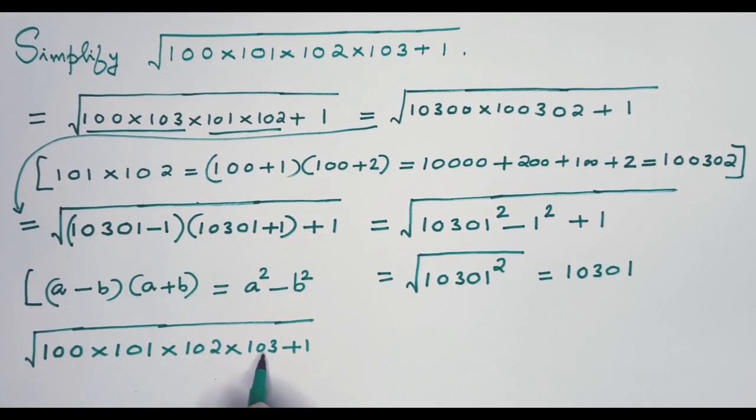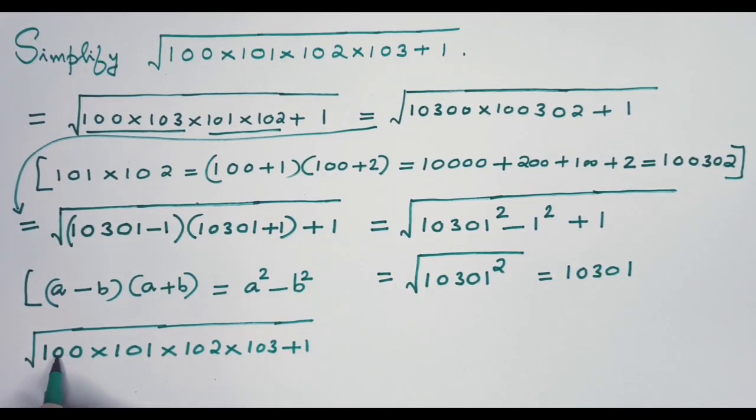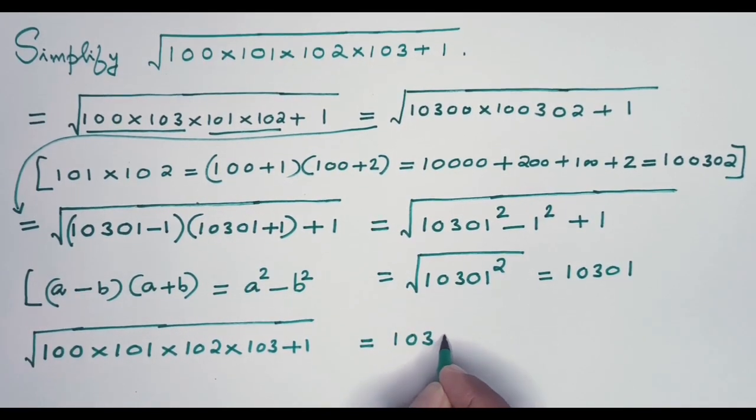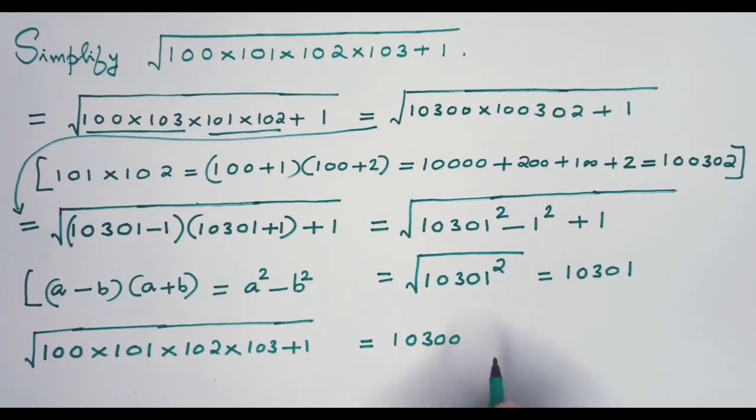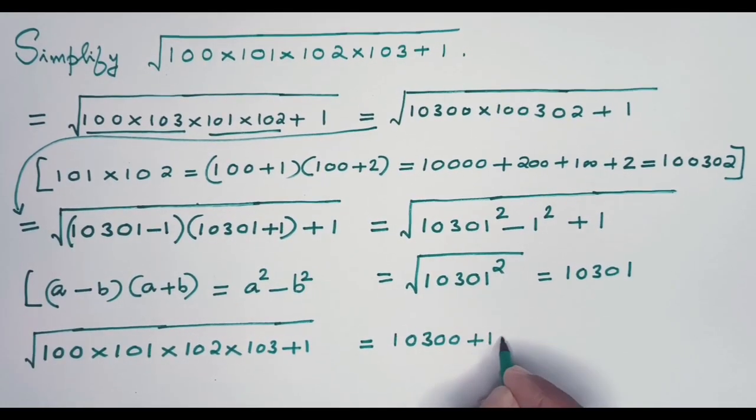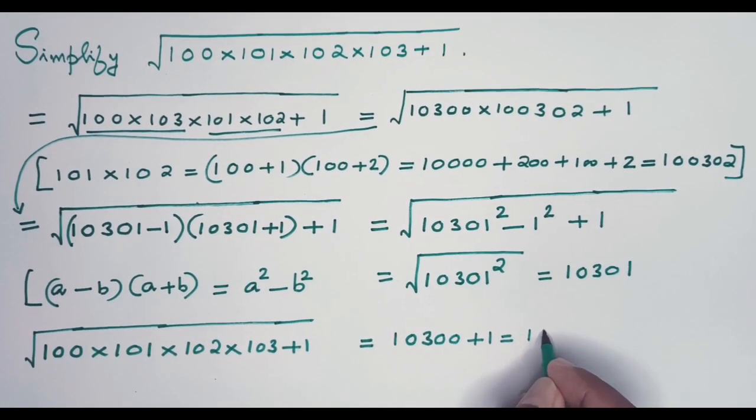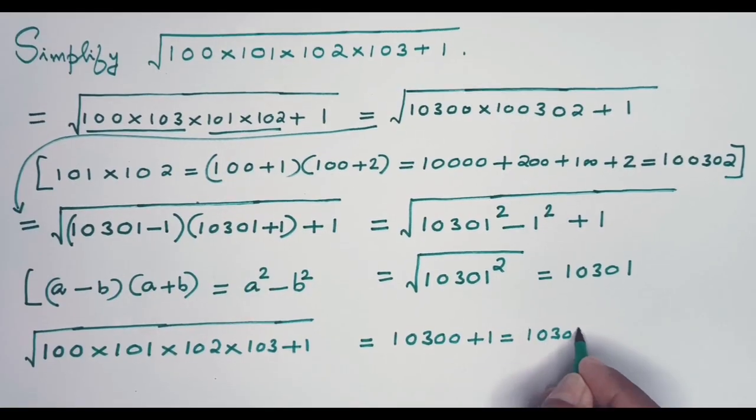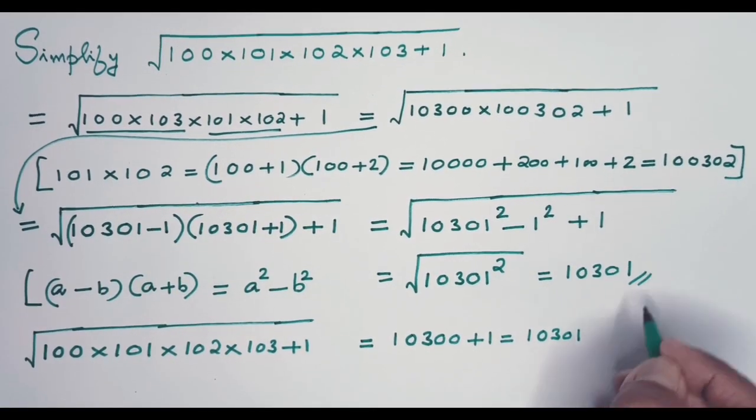What you do is there are 4 terms in the product. You multiply the first and the last. What do you get? 10,300. Then just add 1 to that. That's all. 10,301. That's the answer we have got here, which you are getting here.